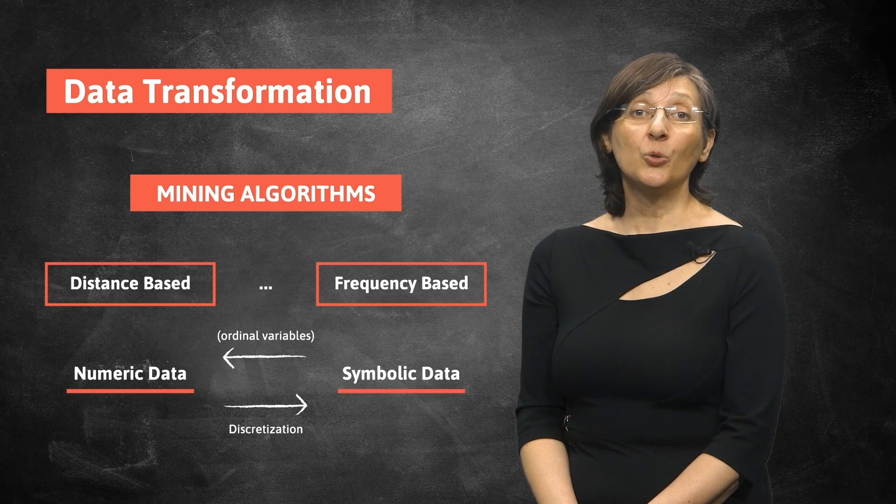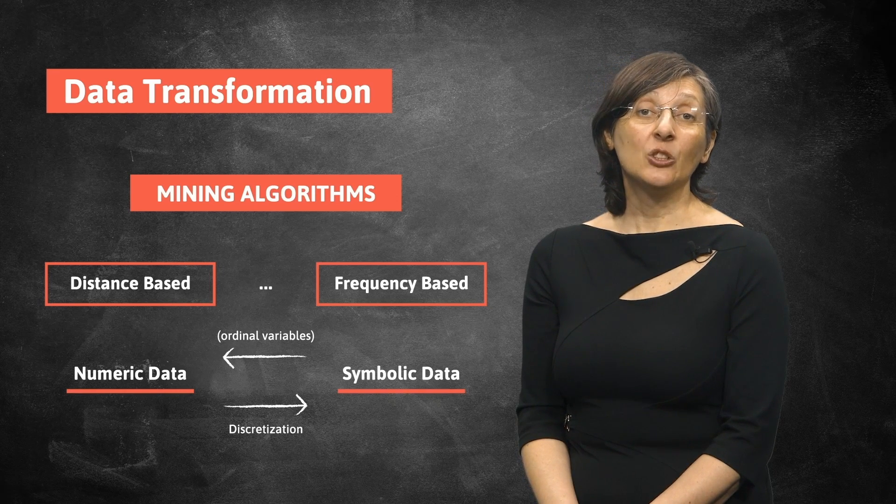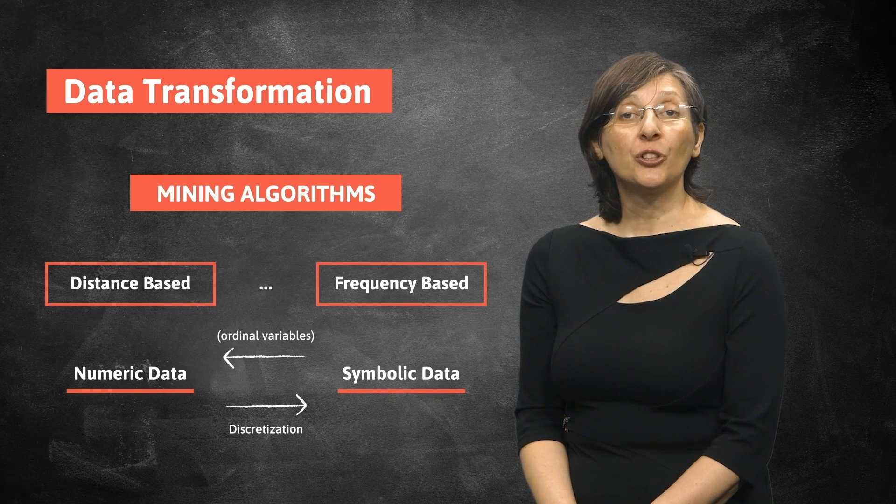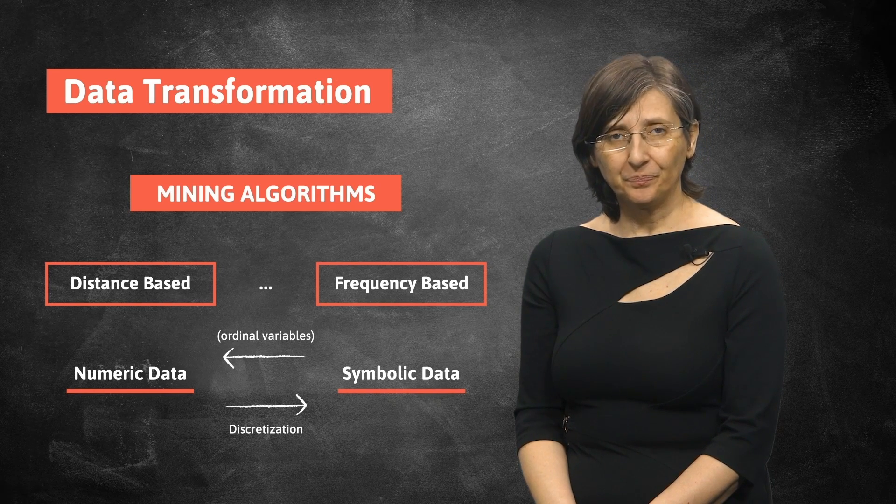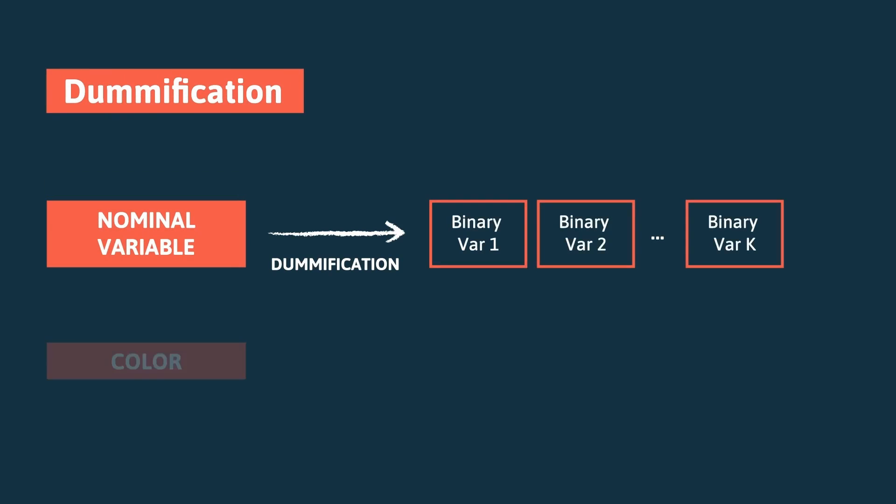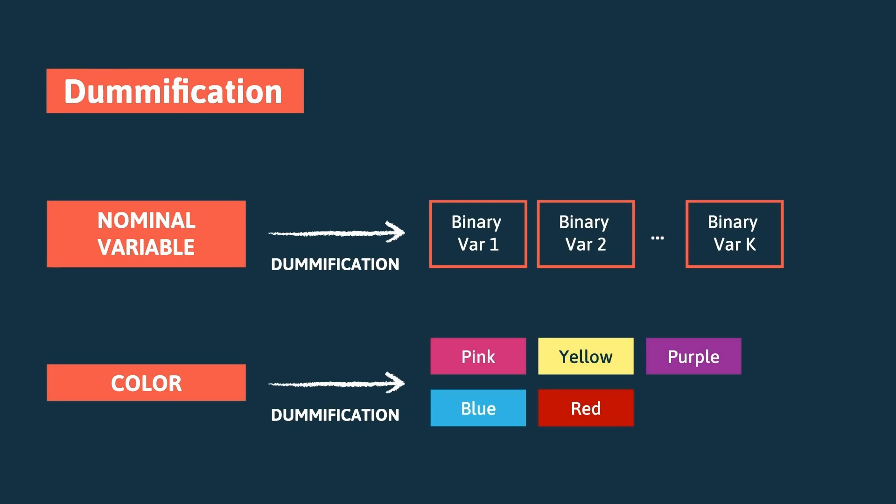The problem is how to deal with nominal data and the solution to it is a process called dummification. Dummification, also known as one-hot encoding, is the process of transforming symbolic data into a set of binary variables which only one can take a positive value.